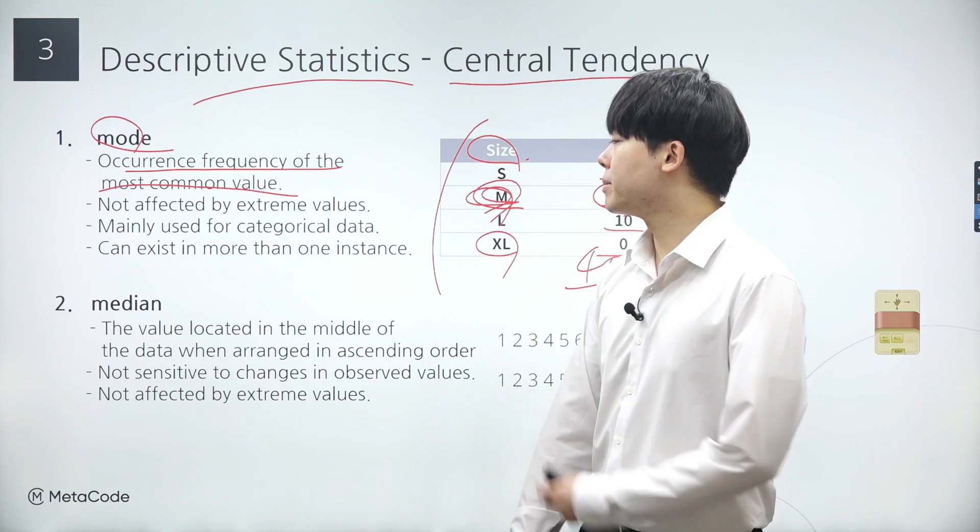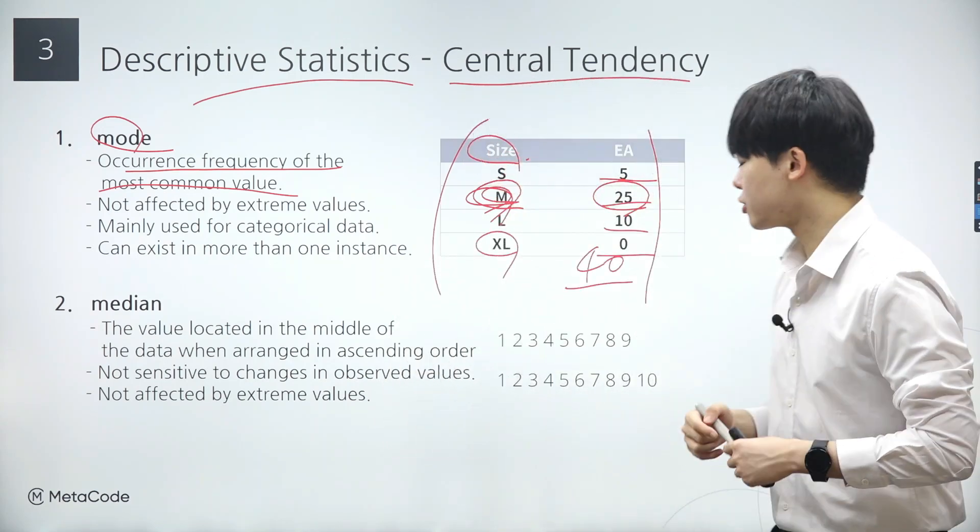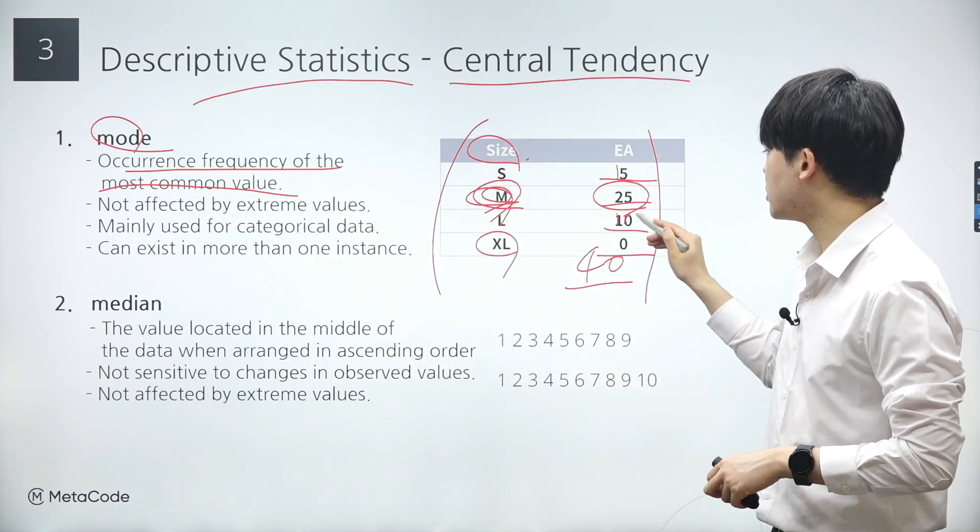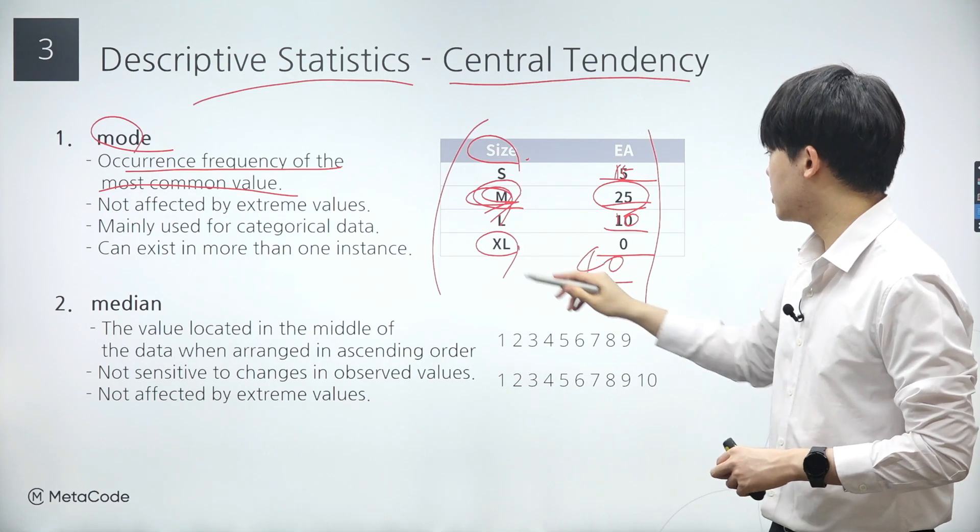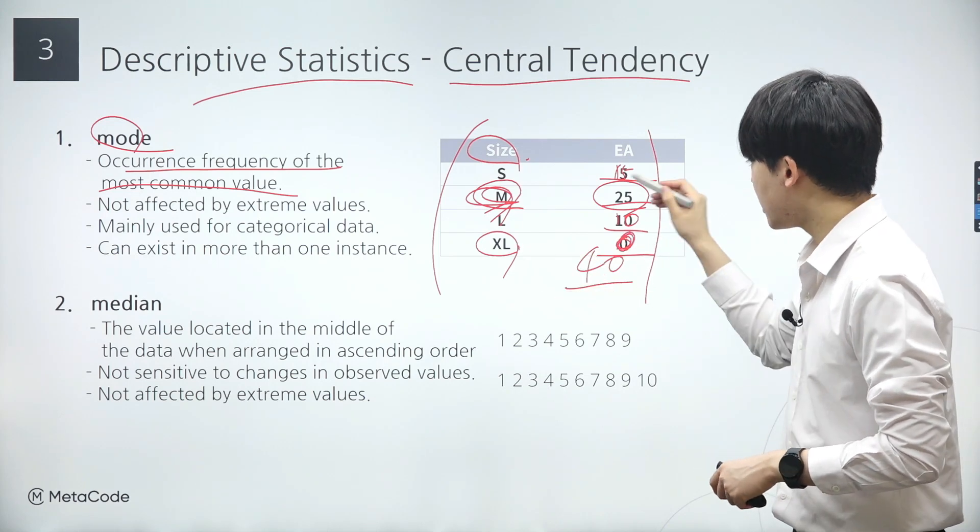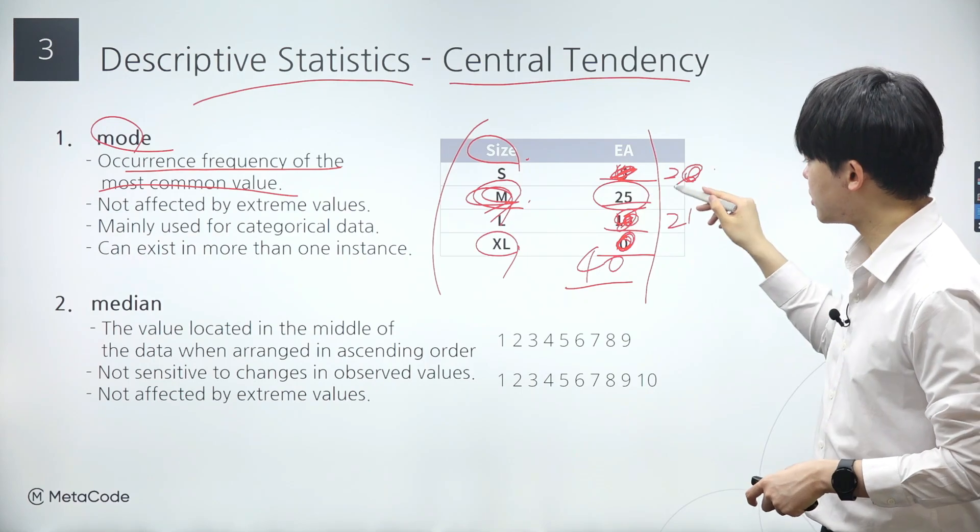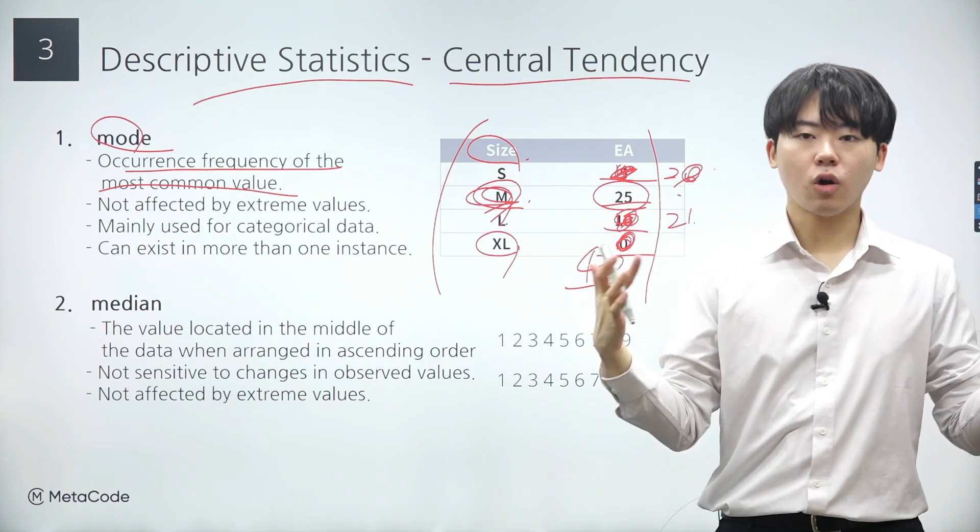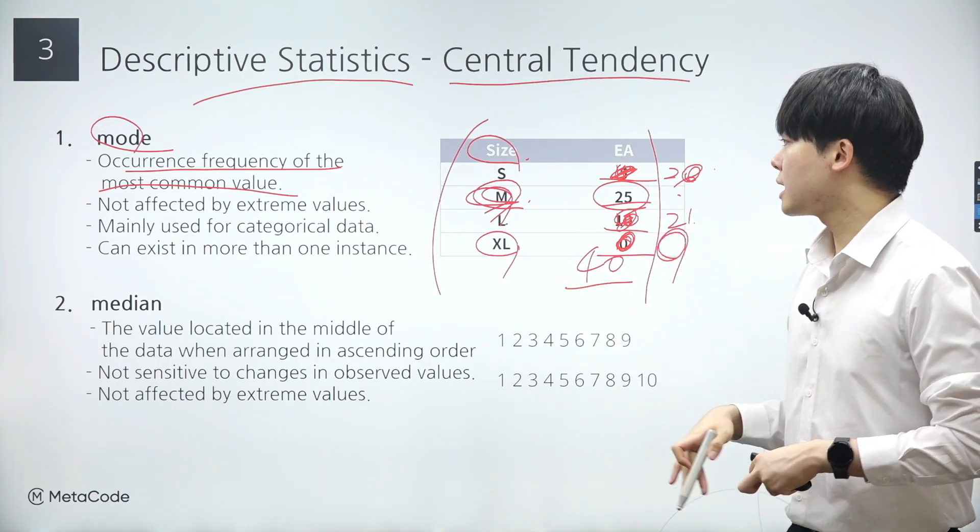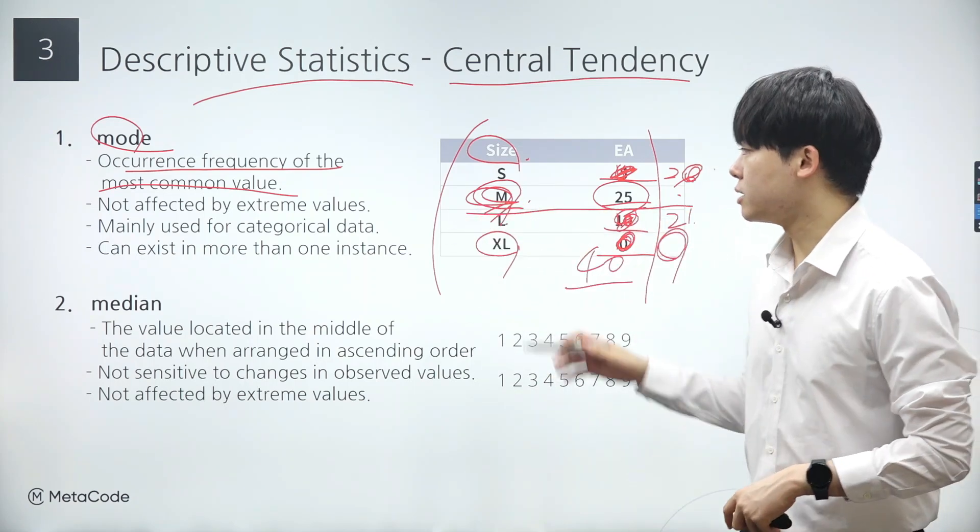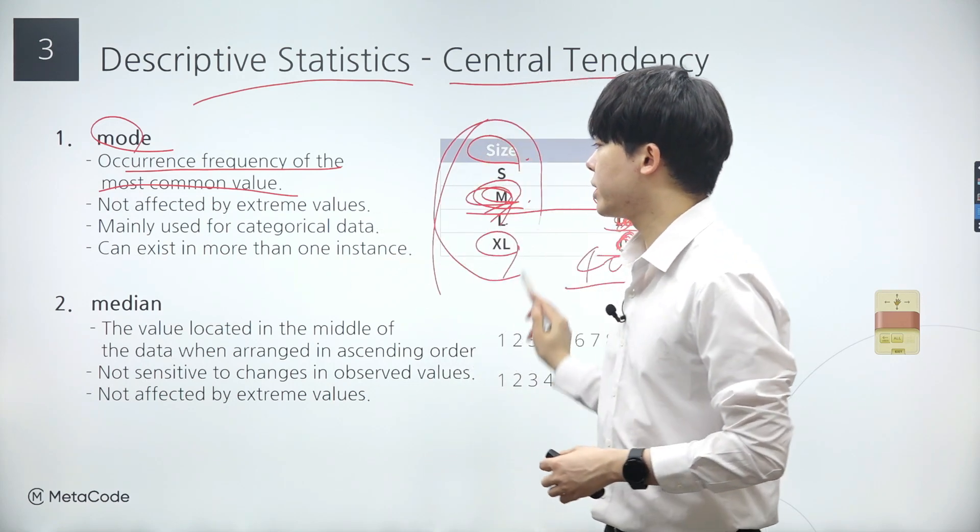A key characteristic of the mode is that it is not affected by extreme values. For example, imagine the number of shoes sold for the small size increases to 15, but the numbers for the other sizes remain unchanged. The overall distribution of the data set barely shifts. Now, let's say the sales for the small size increased further to 20, and the sales for the large size bumped up to 21. The differences between the numbers are relatively small. Then imagine the sales for the extra large size dropped to zero. Since the number of sales for the extra large size is relatively small compared to other shoe sizes, it's an extreme value. Although we have an extreme value in our data set, the medium size remains the mode, illustrating the mode's robustness to extreme values.